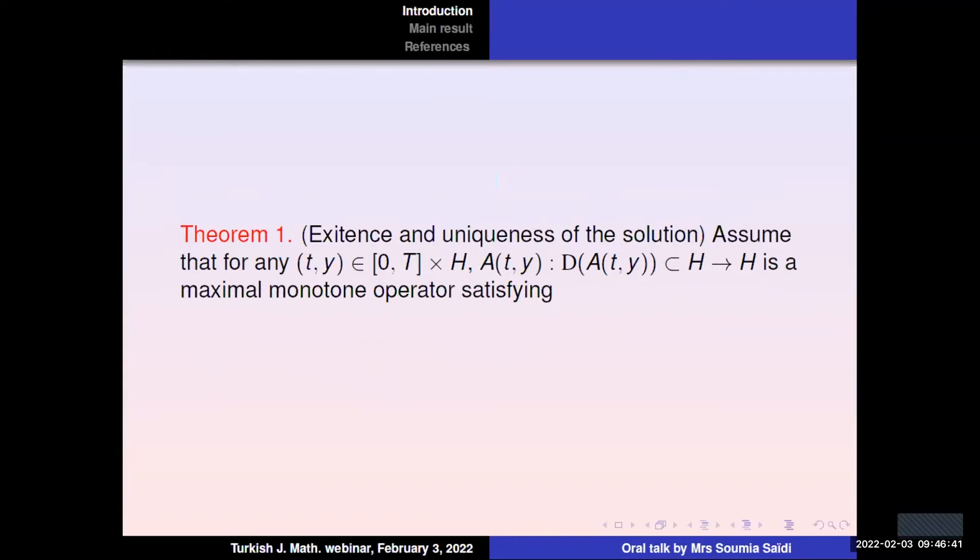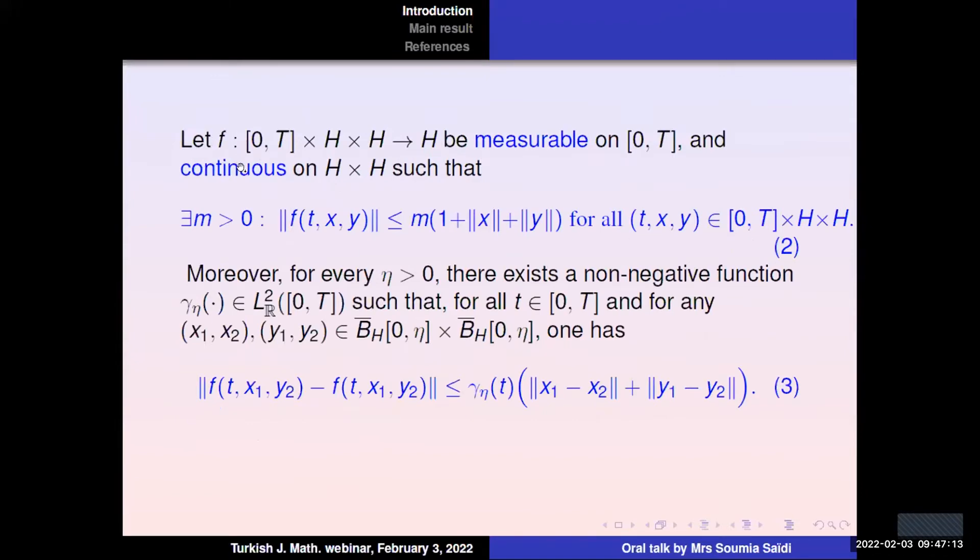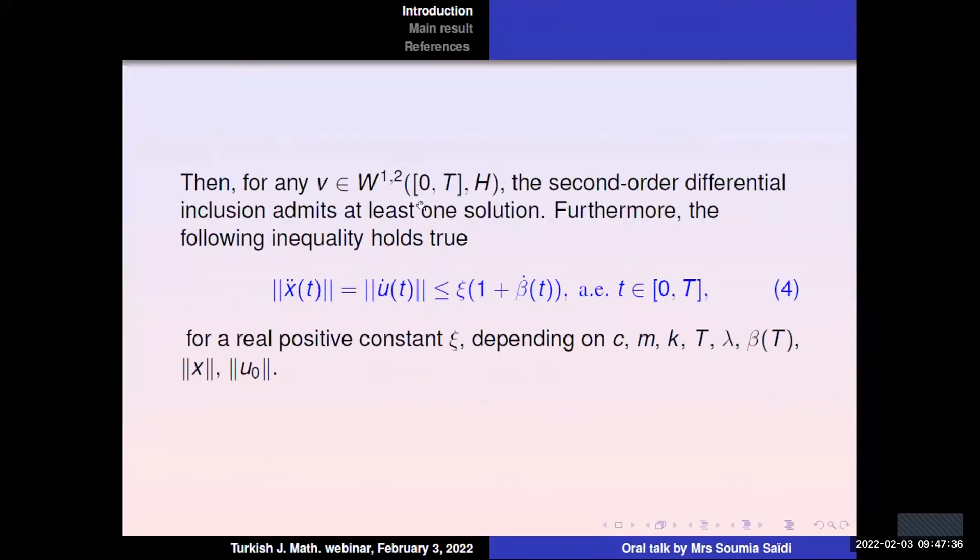So our first theorem is the following. If we assume that the operator A(T,Y) is a maximal monotone operator that varies in an absolutely continuous way in time and in a Lipschitz continuous way in state that involves the element of minimal norm and that satisfies a ball compactness assumption, then if we consider a single-valued perturbation which is measurable in time and continuous with respect to its second and third variables such that these estimates hold true, we impose also a local Lipschitz condition on bounded sets as follows. Then, for u_0, v_0 in W^{1,2}, the second-order differential inclusion admits at least one solution and we have this estimate of the velocity u dot.